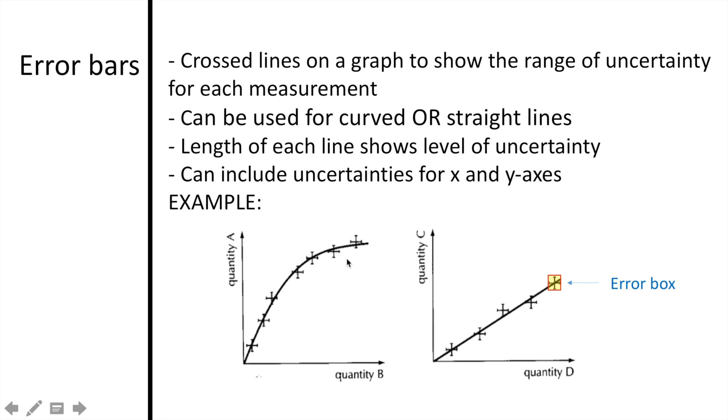Each line looks like a bar, which is how we get the term error bar. Also notice how the crossed lines create a box. This is called an error box, which is essentially the area of uncertainty for both the y- and x-values. Error bars can be seen and used on both curved graphs as well as straight-lined graphs.